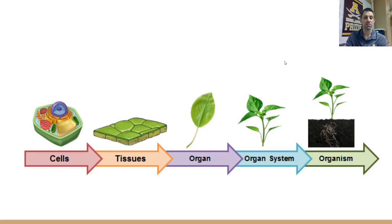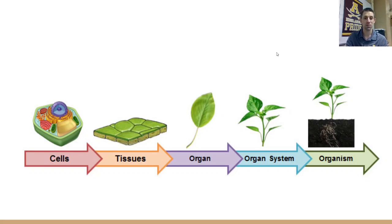Organ systems are easy for plants — there are just two. There's the root system, which is everything beneath the ground, and the shoot system, which is everything above the ground, including stems, leaves, and all the other structures. The organism is when you put those two organ systems together.